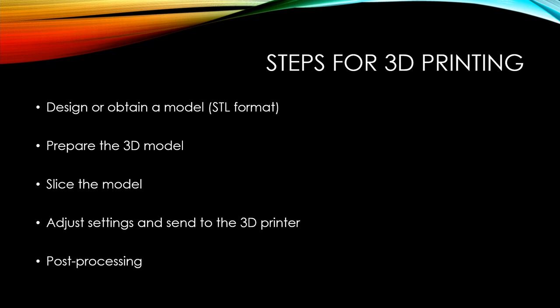Whatever technology we are using, there are common steps for 3D printing. First, we obtain the model — either designing it from scratch or getting it from an intraoral scanner. The model must be in STL format. Then we prepare and edit the 3D model if needed, slice the model, and adjust settings before sending it to the 3D printer.